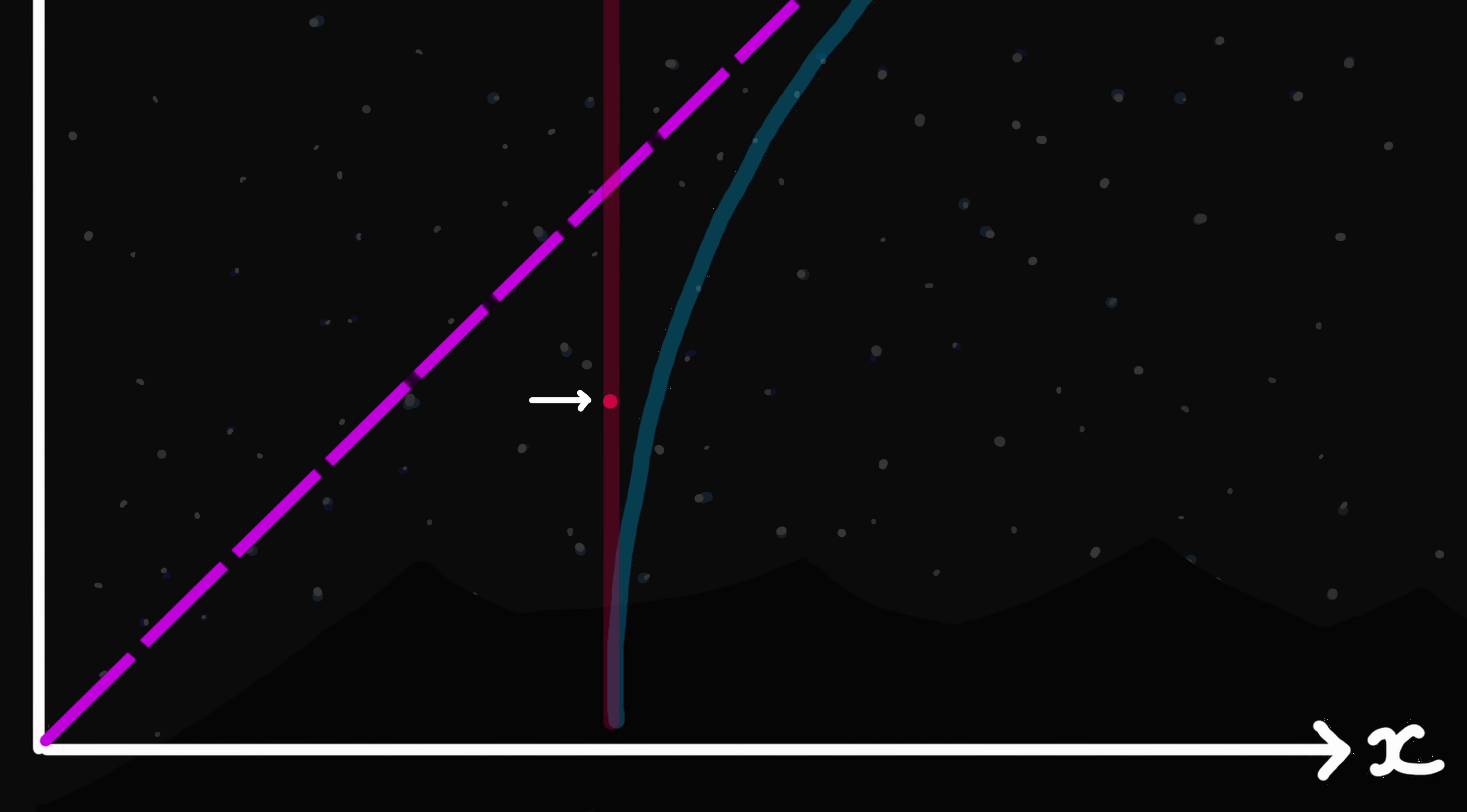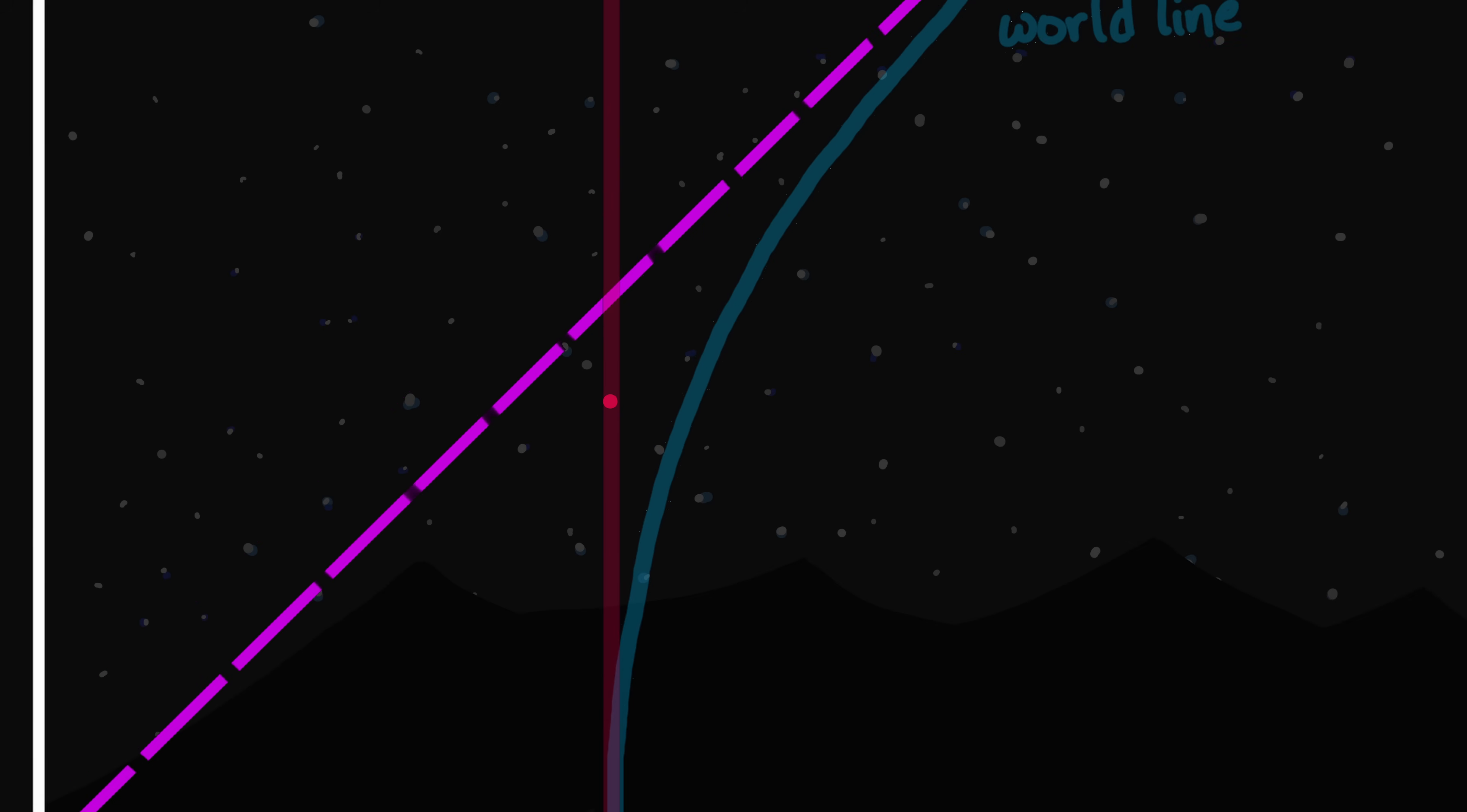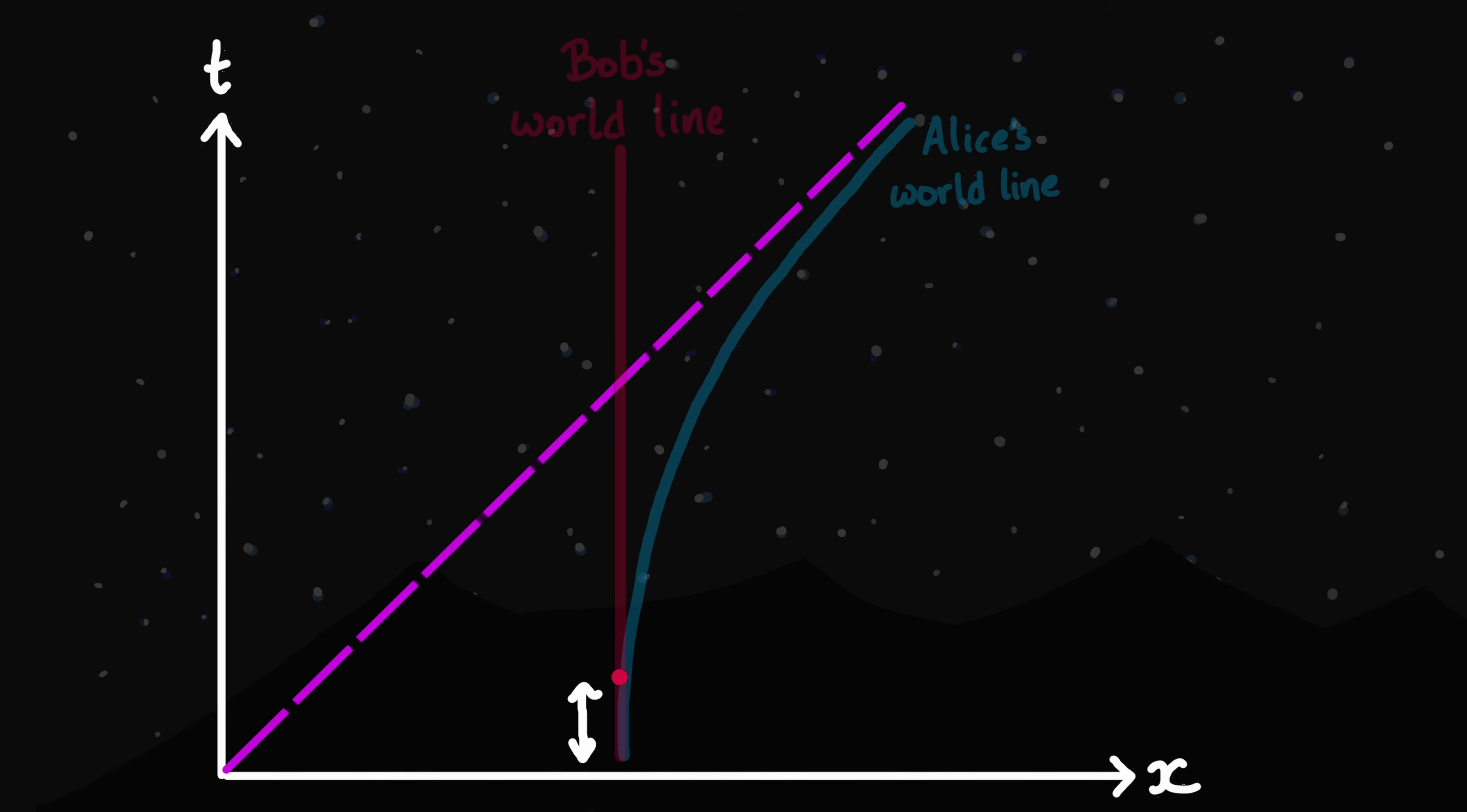When Bob was here, he could have sent out a light beam signal like this, and it would have got to Alice at this point in time for her. As Bob was here, his light beam would have arrived at Alice at this point in time. And we can see that even if Bob emits light signals at regular intervals from his perceived time, that it takes Alice longer and longer to get those signals from her perceived time. This means that she sees Bob slowing down, both in terms of how fast he's moving towards the black hole and in terms of any of his body movements, heartbeat and everything else that he's doing.